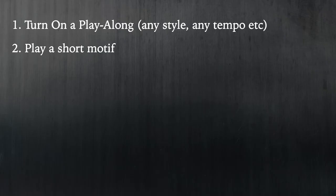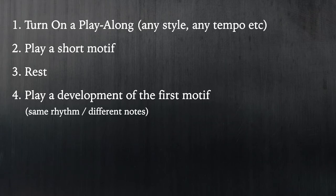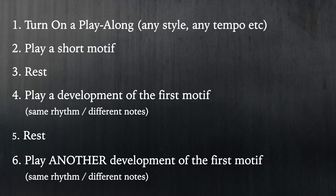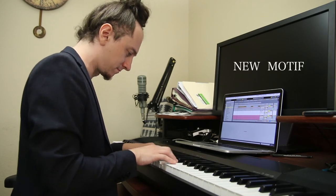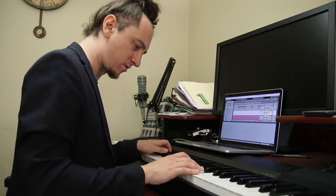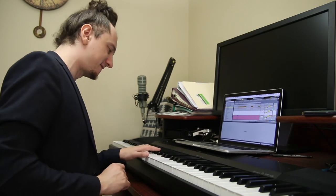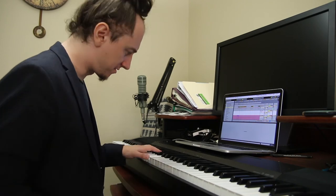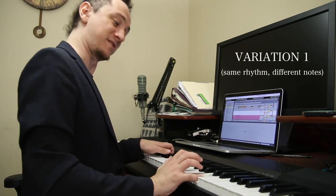The second exercise is very similar to the first one, except this time you're going to be playing two developments of each idea. So play an idea for one or two bars, rest for one or two bars, then play a development of the first idea by keeping the same rhythm and changing the notes. Rest for one or two bars, and then play another development of that same first idea by keeping the same rhythm and changing some of the notes. So in this exercise, you simply play two developments of each idea instead of one like in the first exercise. Here is a demonstration of how that looks.